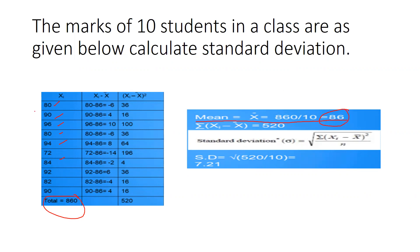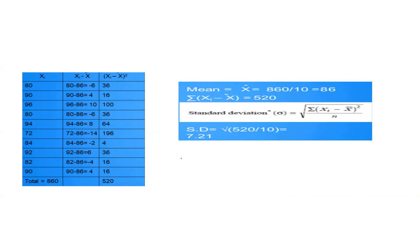Now, one by one, we find the distance of each mark from the mean: 80 minus 86 equals −6; 90 minus 86 equals 4; 96 minus 86 equals 10; 80 minus 86 equals −6; 94 minus 86 equals 8, and so on. We then square each of these values: 36, 16, 100, 36, 64, and so on. The summation of (x minus x-bar) squared equals 520. Putting this into the formula: 520 divided by 10 gives a standard deviation of approximately 7.21.